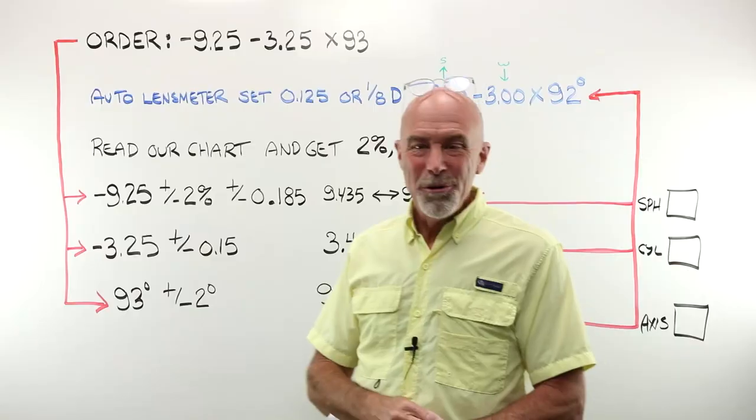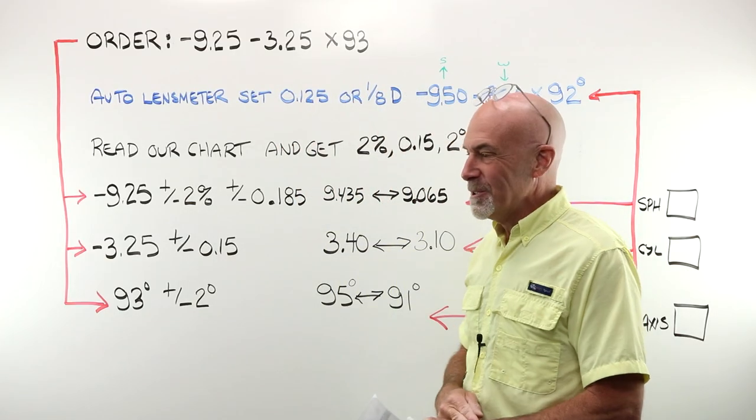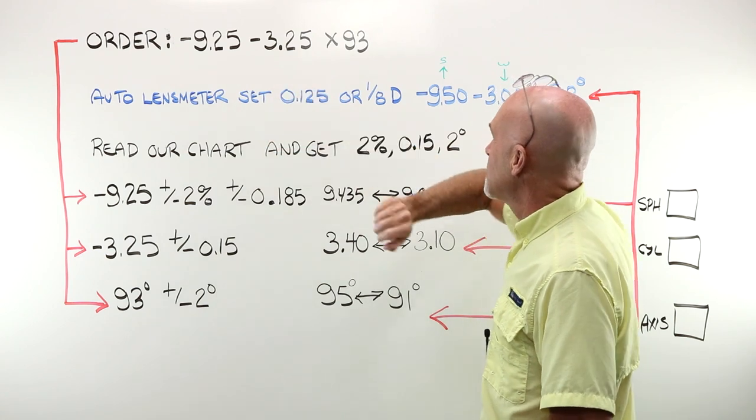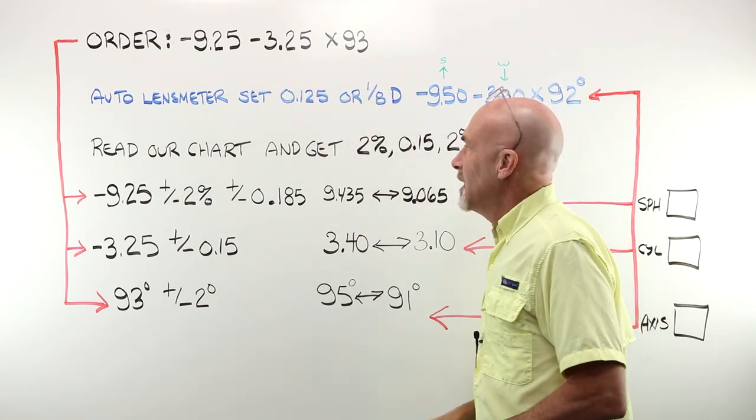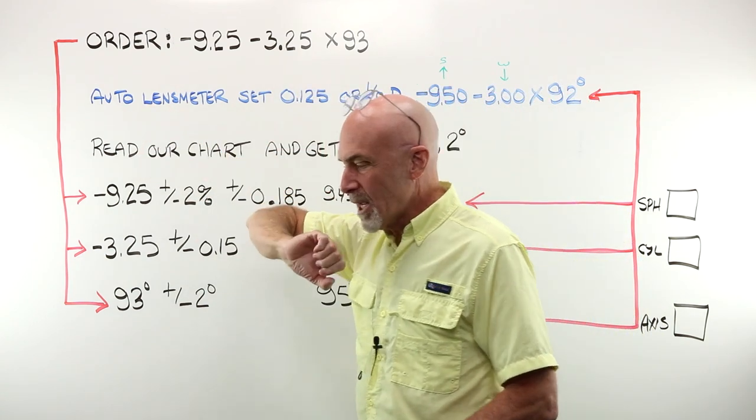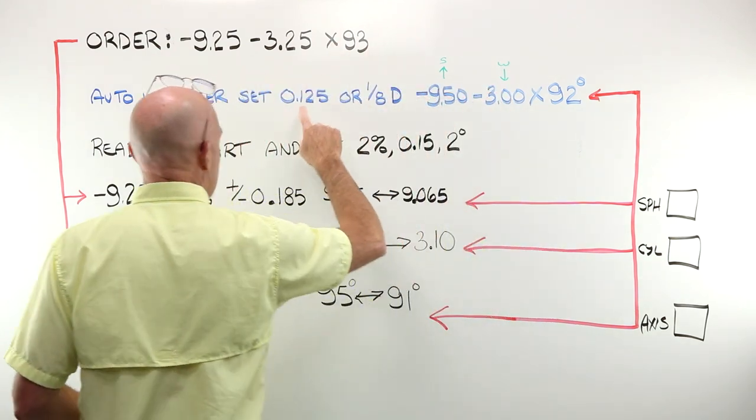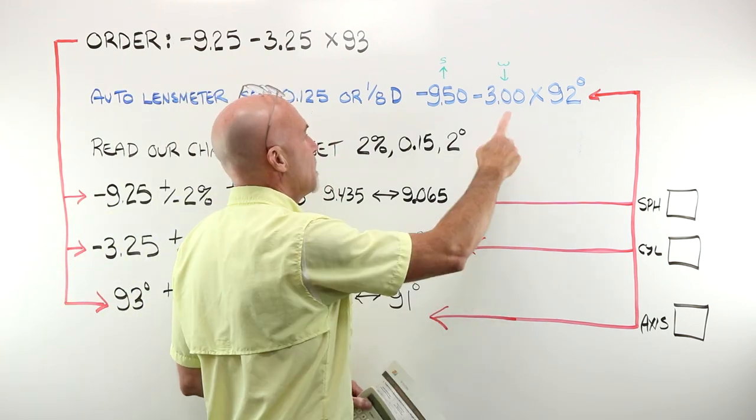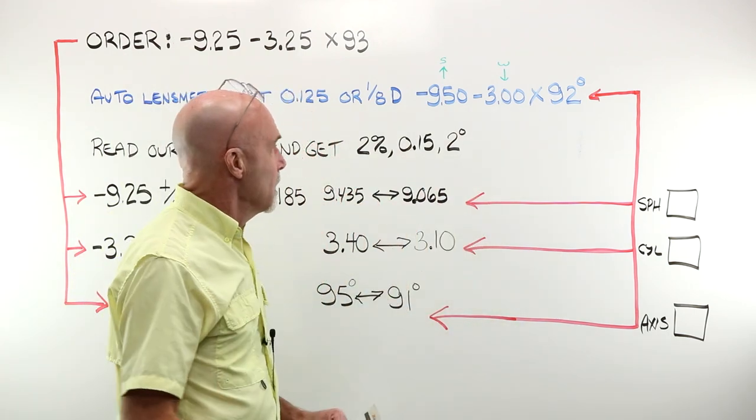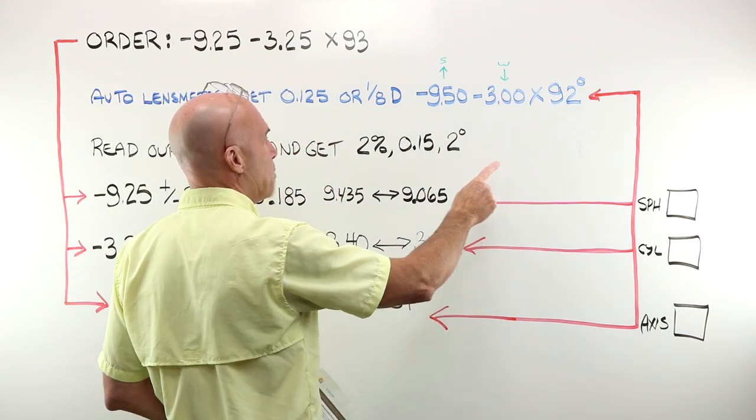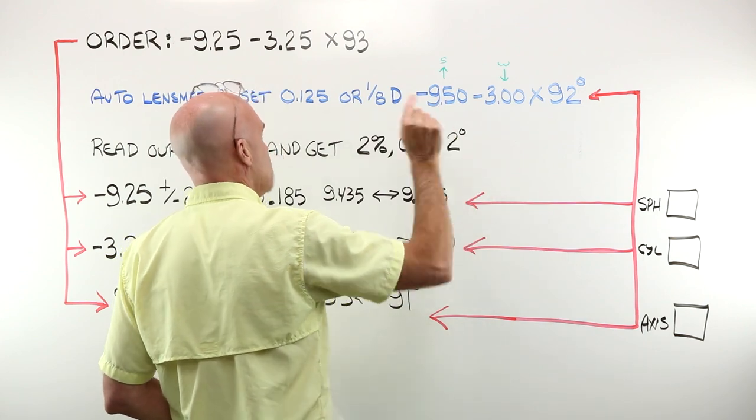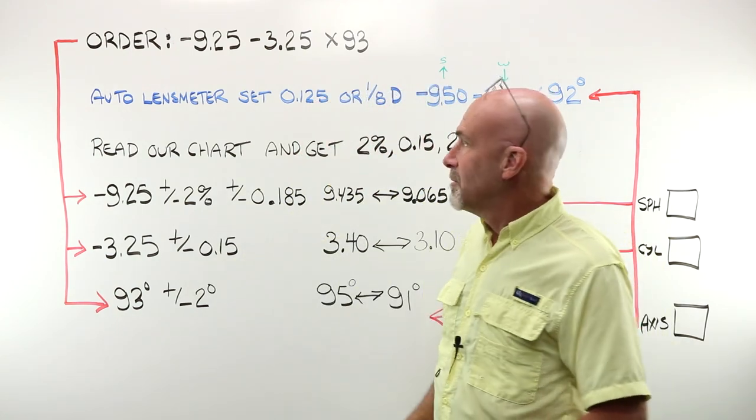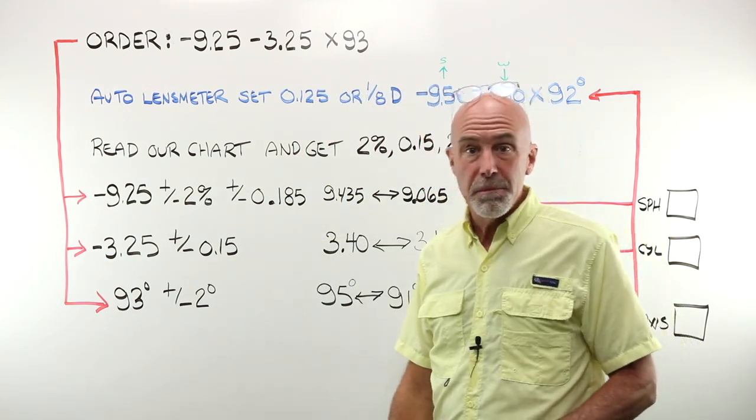Let's do one more. Are you ready for example number two? Good. Here we go. You ordered a minus 925, minus 325 at axis 93. You have got a gorgeous high-end auto lens meter set to read to the nearest .125 or eighth diopter step. You place the glasses in the auto lens meter. Line everything up correctly. Hit the print button and the ticket tells you you actually have a minus 950, minus three at 92. Are you going to be able to call up the customer and tell them to come and pick up their glasses or not?